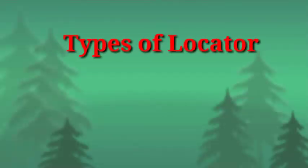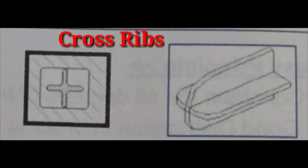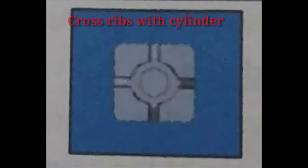Now we are going to see the types of locator. First is the cross rib. You can see the image. Cross ribs are recommended on structural parts and should be avoided on visible parts. Second type is cross rib with cylinder, which is recommended only for small or big parts.